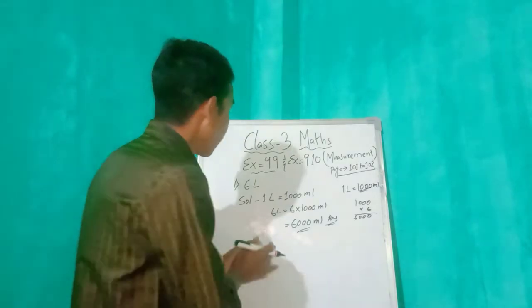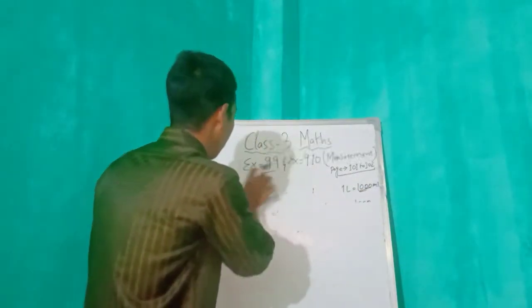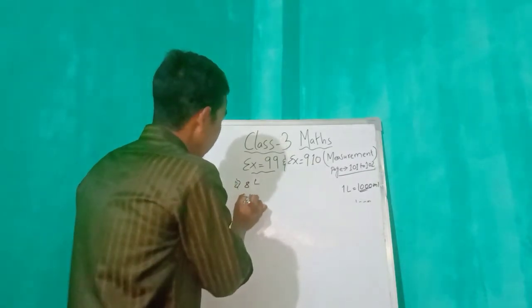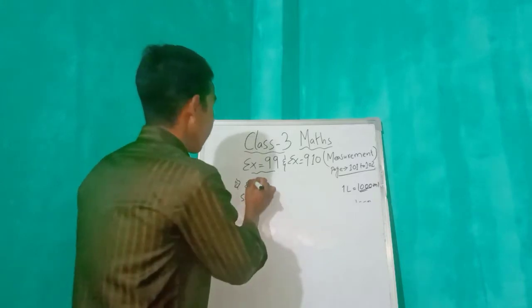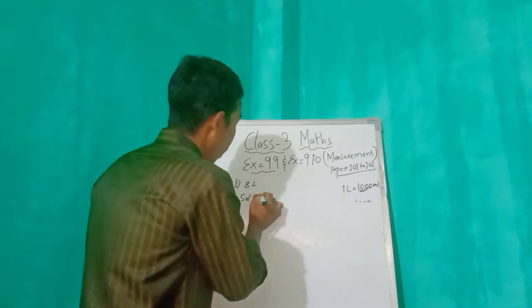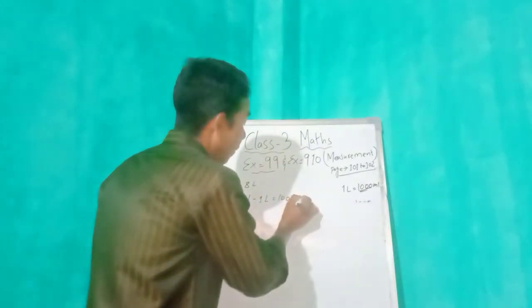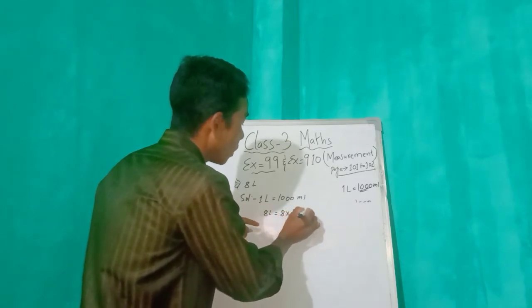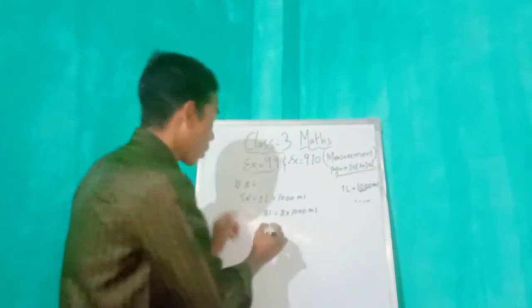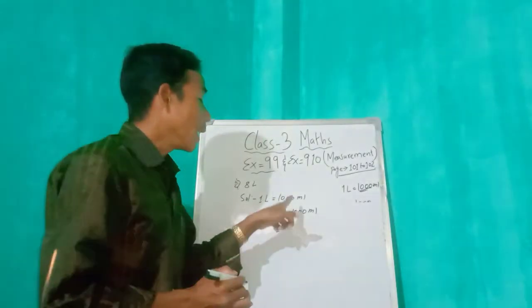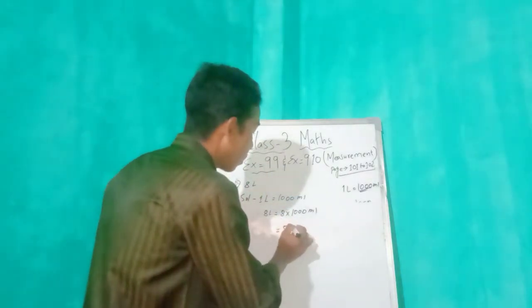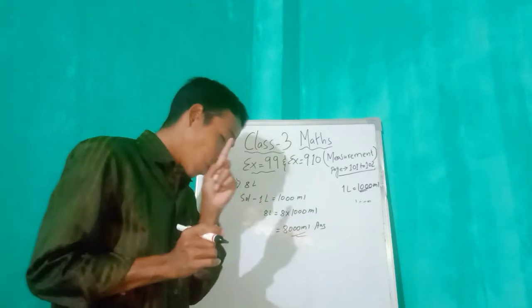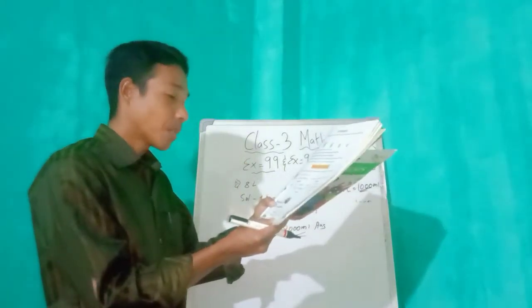Number two: we have 8 L, which means 8 liters. We will convert into milliliters. One L equals 1000 mL, therefore 8 L equals 8 into 1000 milliliters, which is 8000 milliliters. That is our answer. It is very easy — have you got it? Okay, one more: we'll try number 5.